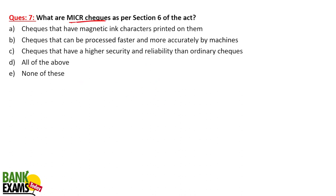What are MICR cheques? If you have noticed a cheque, there is a magnetic number printed on it. The purpose of that number is that magnetic cheques with magnetic ink printed on them allow faster processing and provide high security. It is very difficult to fake them — creating a fake MICR cheque is near to impossible.